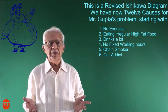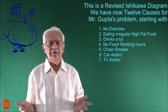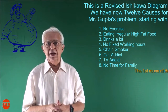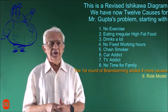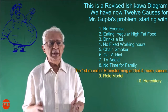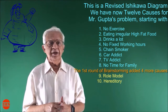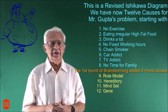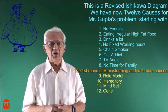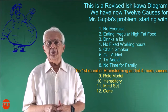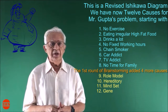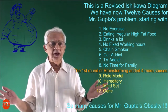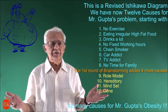TV addict, no time for family. The first round of brainstorming added four more causes: cause 9 — Role Model, cause 10 — Hereditary, cause 11 — Mindset, cause 12 — Gene. Mr. Gupta is not confident that this process of identifying causes for his bad product will help him improve. So many causes for Mr. Gupta's obesity.